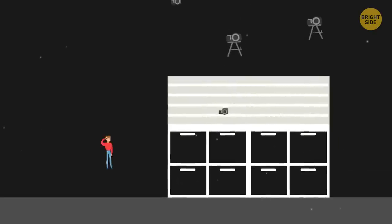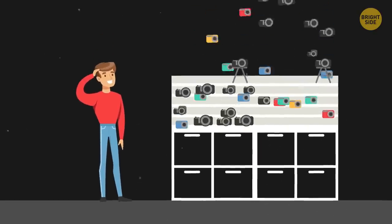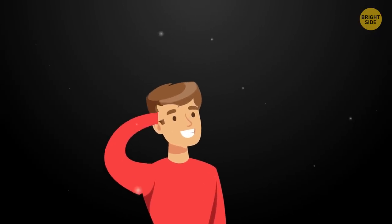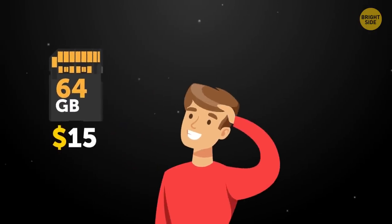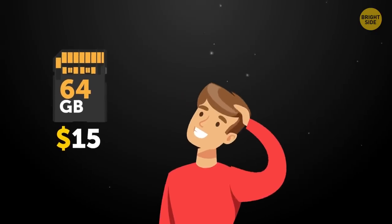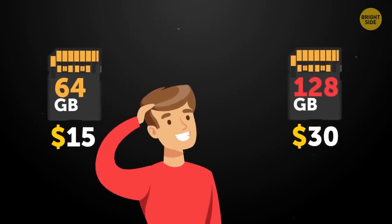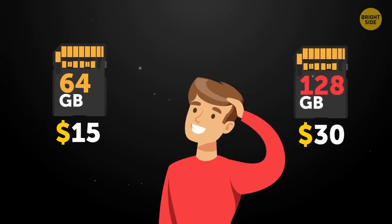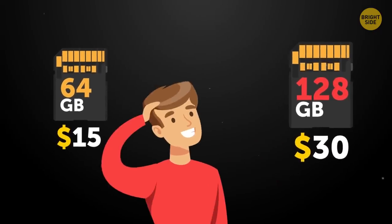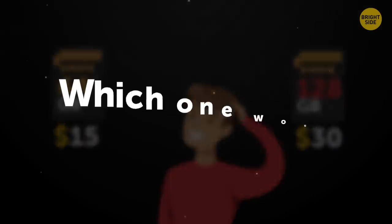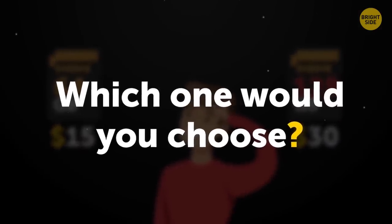Number 6. Decoy effect. Let's say you're at an electronics store, choosing a new SD card for your camera. You see two options before you. One has the capacity of 64 GB and costs $15, and the other has a storage space of 128 GB but costs $30. There's an equal chance of you choosing either of them. Some will prefer greater capacity, while others will go for lower price. Which one would you choose, by the way? Let me know down in the comments.